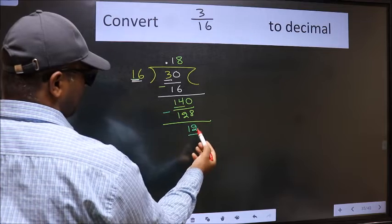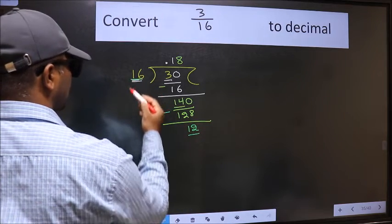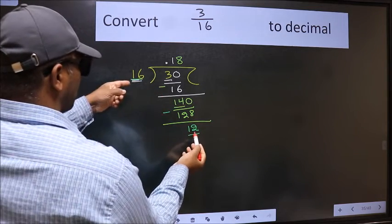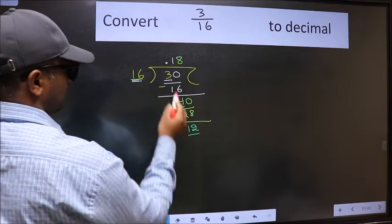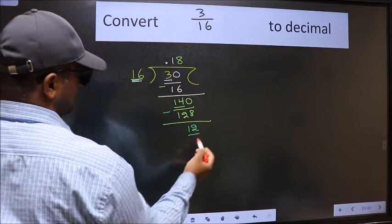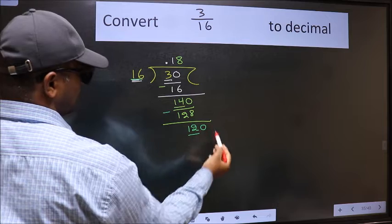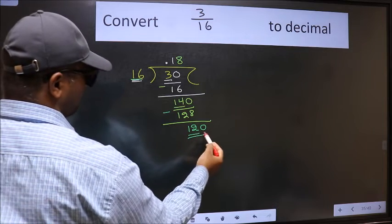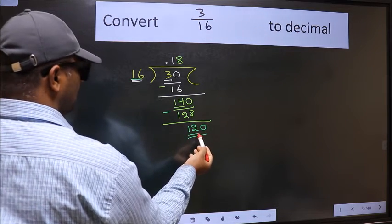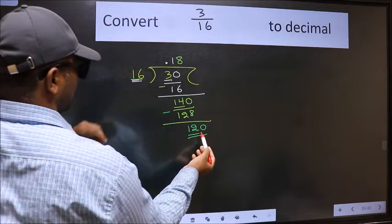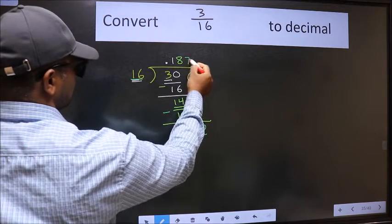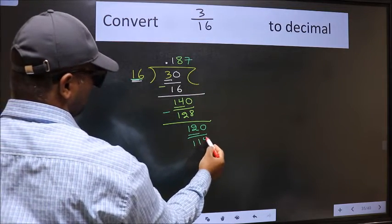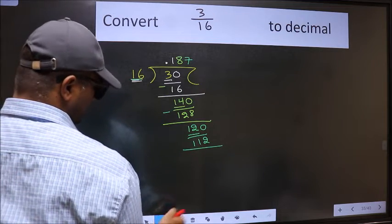Now here we have 12 and here 16. 12 is smaller than 16 and we already have the decimal. So we can directly take 0. Now 120. A number close to 120 in 16 table is 16 sevens, 112.